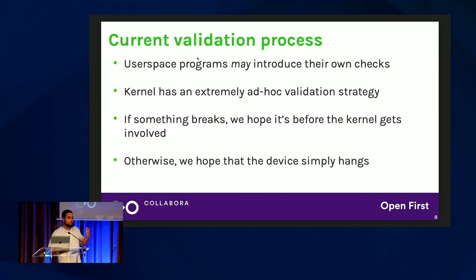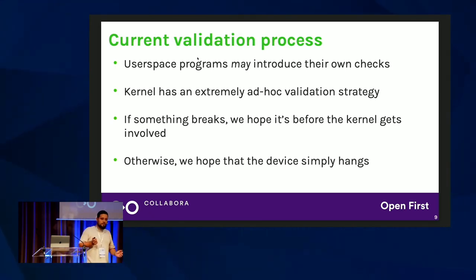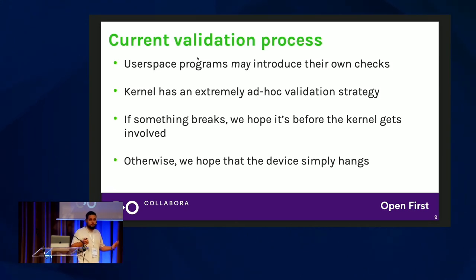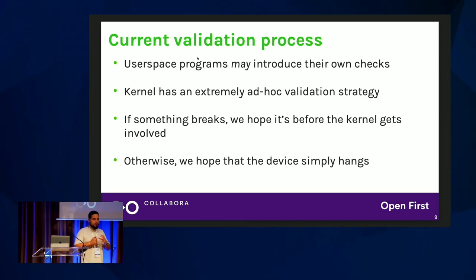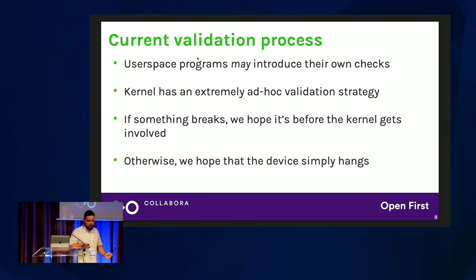Now some user space programs introduce their own checks — like Chromium has a bunch of checks — but that's user space, so we basically cannot trust that from a kernel perspective. And in the kernel we have a very ad hoc validation strategy, where somebody read through the specification PDF and tried to manually write a bunch of if statements to check whether the data within the metadata is within some bounds. That's obviously not good, and obviously very prone to errors.